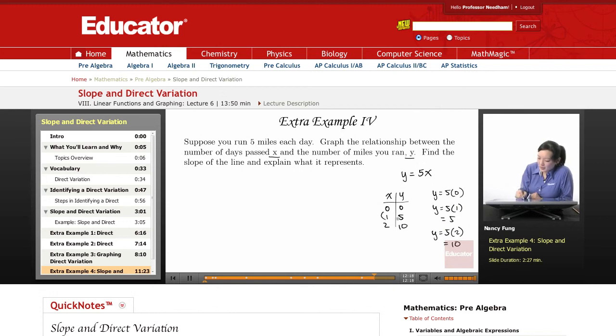So let's find the slope. I'm going to use these two as my coordinates: (1, 5) and (2, 10).